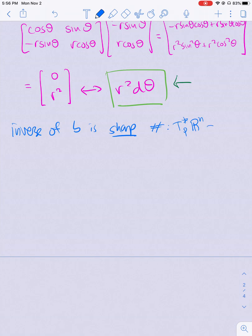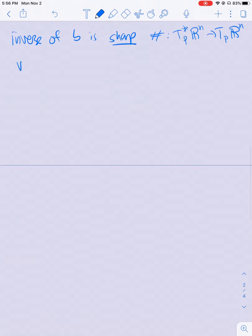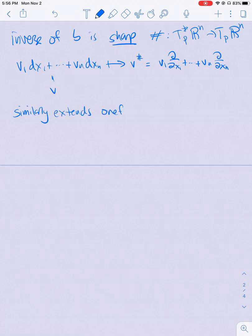All right, so flat has an inverse which is called sharp. So sharp is denoted with a sharp and it goes from the cotangent space at a point to the tangent space. So if I have a differential form v_1 dx_1 summed all the way out to v_n dx_n, then this is going to go to v sharp which is defined as v_1 ∂/∂x_1 all the way out to v_n ∂/∂x_n. And similarly, it extends to take one forms to vector fields. And similarly if I have my one form written as a row vector, its sharp is just the column vector v_1 through v_n.